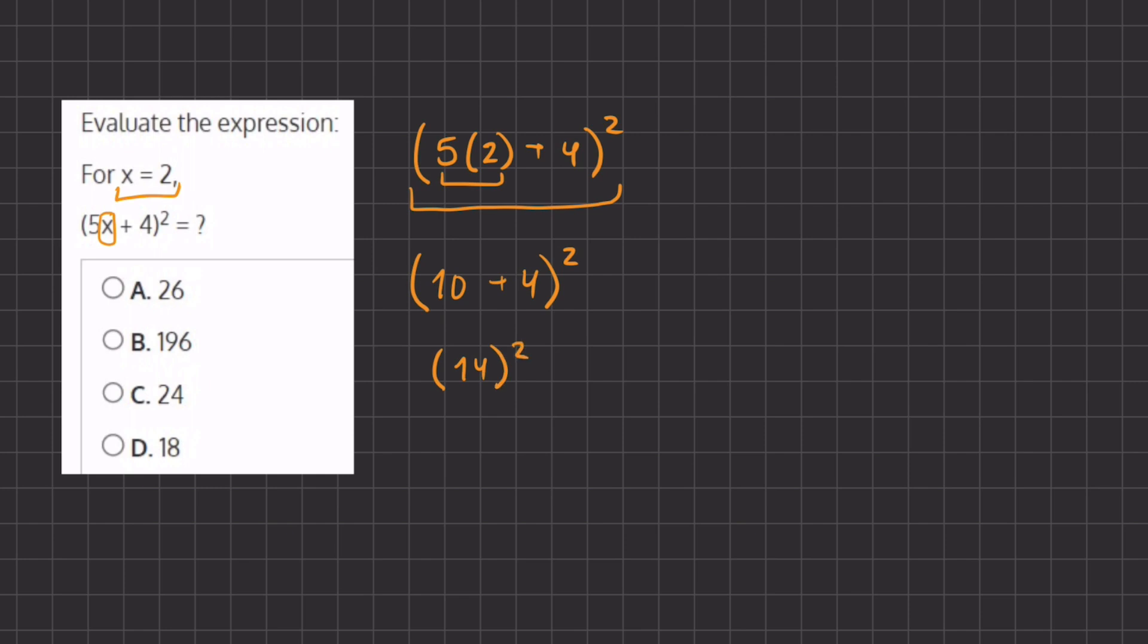So now all we have to do is solve 14 squared. 14 times 14 gives us 196 and that is going to be our final answer for this expression and this corresponds with answer B.